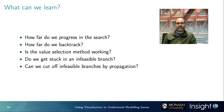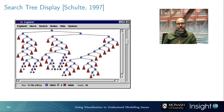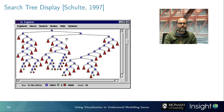One of the early search tree displays is from 1997 — the Oz Explorer developed by Christian Schulter as part of the Mozart Oz constraint programming system. You can see all the common concepts: a root node as the initial start point, branches representing different solver decisions, red triangles representing collapsed failed subtrees — each could hide a huge amount of unsuccessful search — and green diamonds representing solutions.